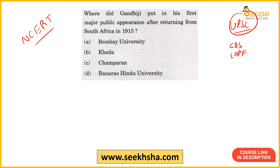The options are: A — Bombay University, B — Kheda, C — Champaran, D — Banaras Hindu University. You can scan various UPSC papers — CDS, CAPF, NDA, General Awareness, Civil Services sections. The answer is Option D: Banaras Hindu University. Questions repeat across various UPSC papers, whether history, polity, economy, or computer science — and computer science questions are also from NCRT.